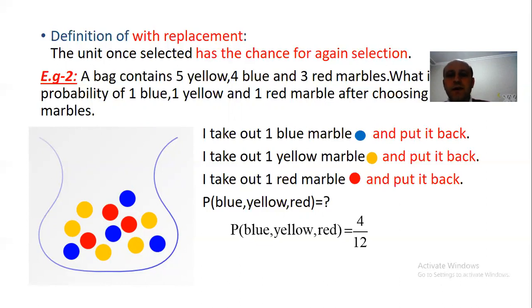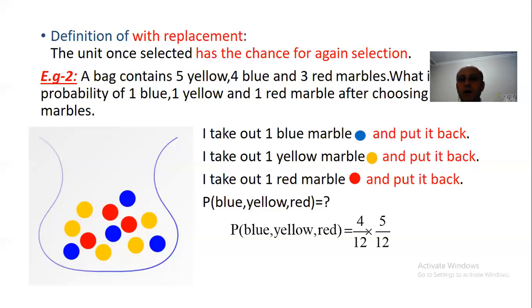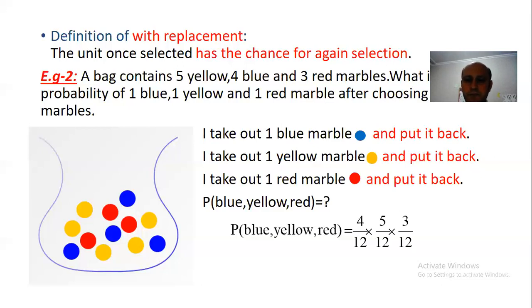Next, I take out one yellow marble and put it back. There are 5 yellow marbles, so the probability is 5 over 12. Then for red, there are 3 red marbles and total outcomes is still 12, so the probability is 3 over 12. Multiplying these together, the result is 5 over 144.